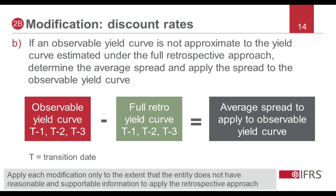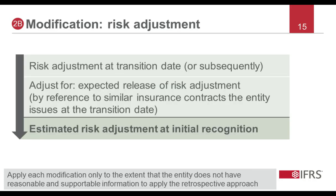We now move on to the modification for the determination of the risk adjustment at initial recognition, applicable when an entity does not have reasonable and supportable information to estimate the risk adjustment at initial recognition. For this modification, an entity starts with the risk adjustment at the transition date and works backwards to estimate the risk adjustment at initial recognition. The risk adjustment at the date of transition is adjusted for the expected release of risk between the date of initial recognition and the date of transition. The expected release of risk is estimated by reference to the release of risk for similar insurance contracts that the entity issues at the date of transition.